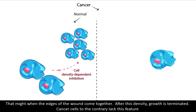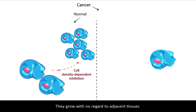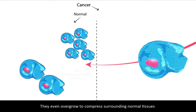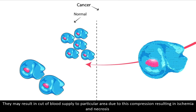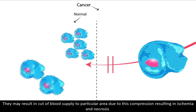Cancer cells, to the contrary, lack this feature. They grow with no regard to adjacent tissues and even overgrow to compress surrounding normal tissues. They may result in a cut of blood supply to a particular area due to this compression, resulting in ischemia and necrosis.